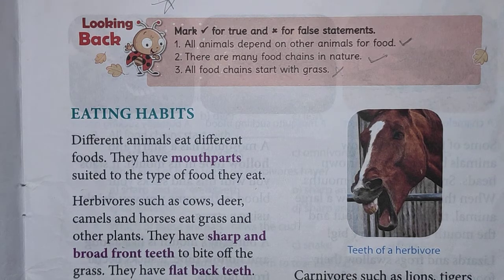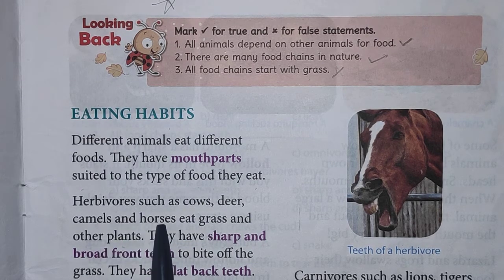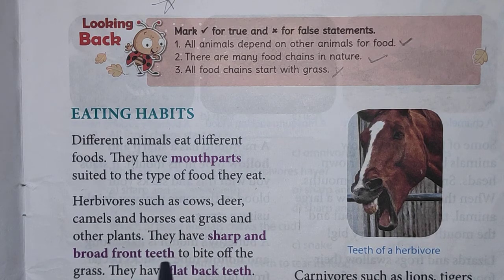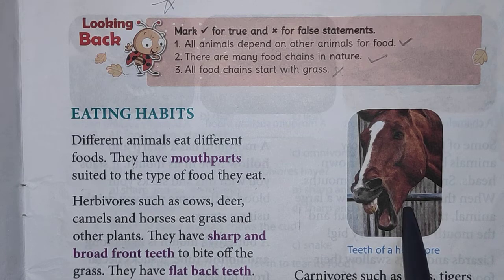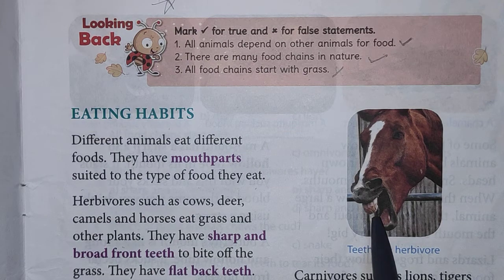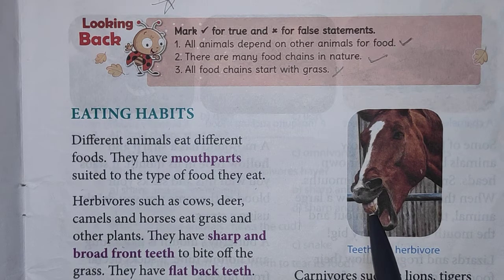Herbivores such as cows, deer, camels and horses eat grass and other plants. They have got sharp and broad front teeth to bite off the grass, and flat back teeth — this helps them to chew their food well. Here a picture of a horse is given. The horse is a herbivore which feeds on plants and leaves. See the teeth, which are sharp and broad — this helps the animal to bite off grass and leaves.